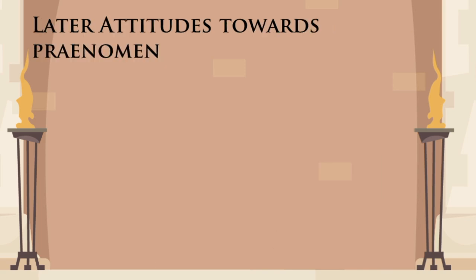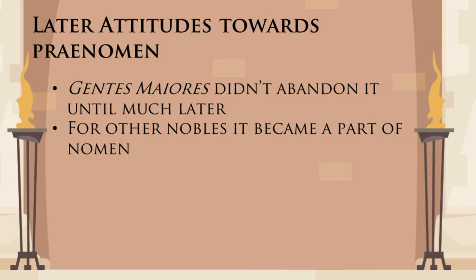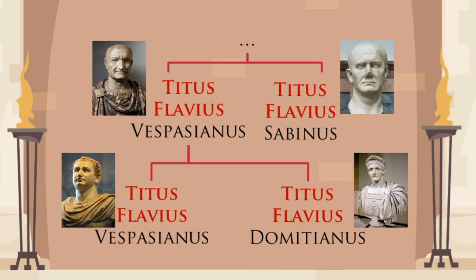But the praenomen didn't disappear altogether. Some aristocratic families continued to use it in the same manner it had been used for centuries. In other families, the praenomen fossilized and became a part of the nomen — every man in the family had the same praenomen. The future emperor Vespasian was born Titus Flavius Vespasianus, had a brother Titus Flavius Sabinus, and two sons: the elder Titus Flavius Vespasianus and the younger Titus Flavius Domitianus.